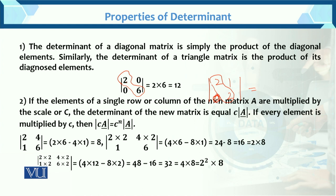The second property: if the elements of a single row or column of an n×n matrix A are multiplied by a scalar c, the determinant of the new matrix is c times the original determinant. For example, take matrix A = [2, 4; 1, 6]. Its determinant = 2×6 − 4×1 = 12 − 4 = 8.